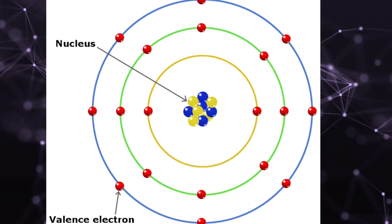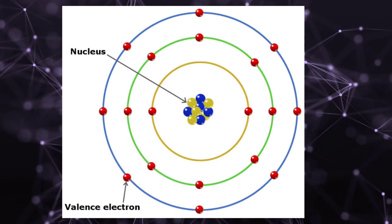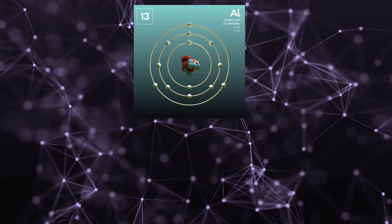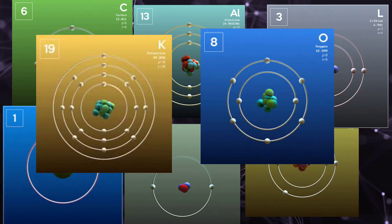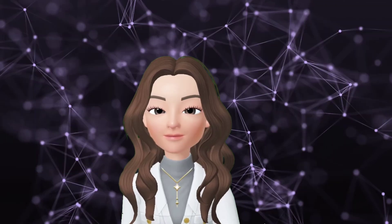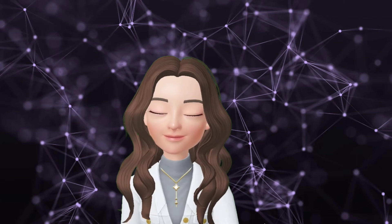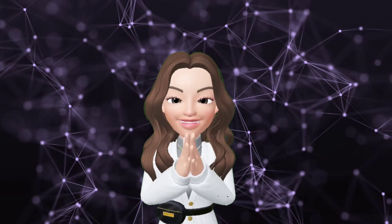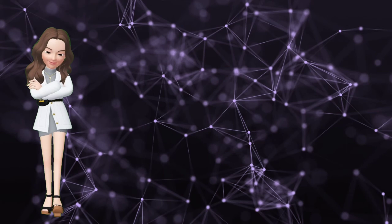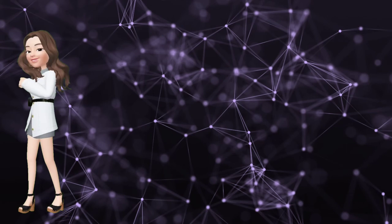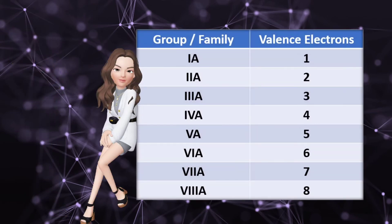Electrons in the outermost shell, or valence electrons, have an essential role in chemical bonding. Elements that don't have 8 valence electrons will undergo chemical bonding. Therefore, we need to know the valence electrons of the elements before we do chemical bonding. We can get the valence electrons by doing electron configuration, but by simply looking at the periodic table, you can determine the valence electrons of elements that belong to family A.